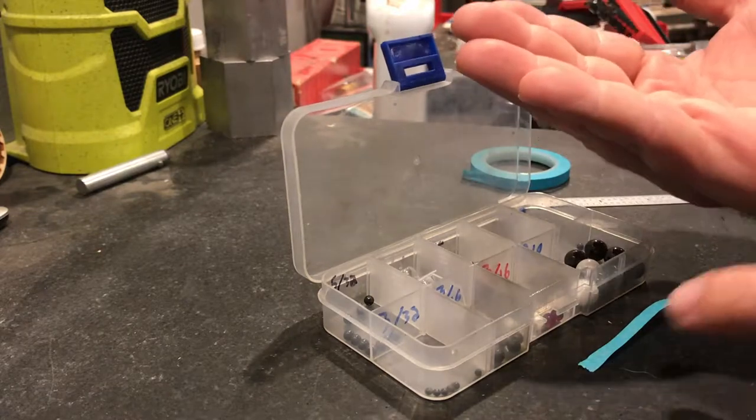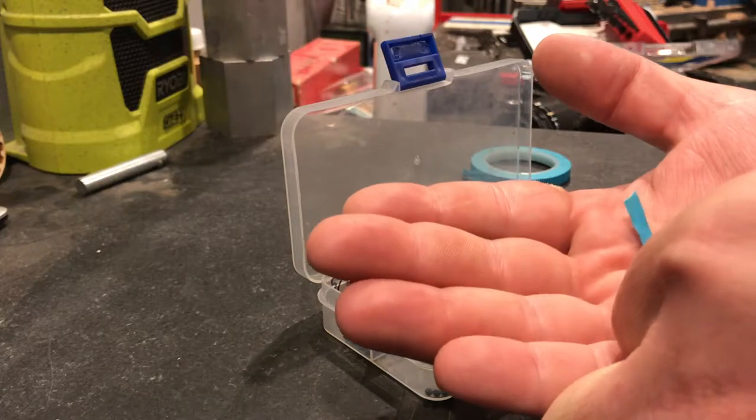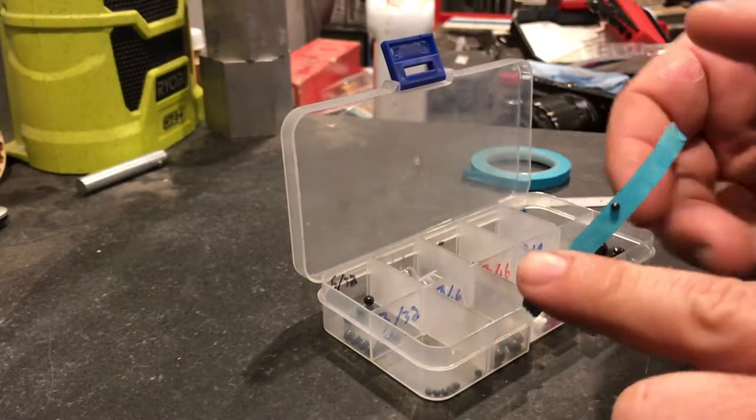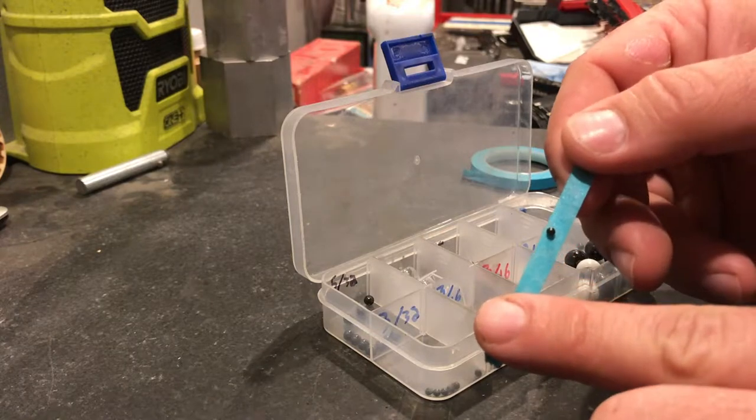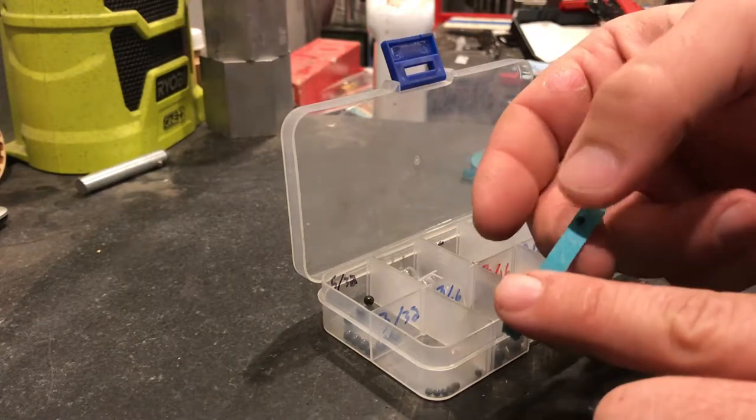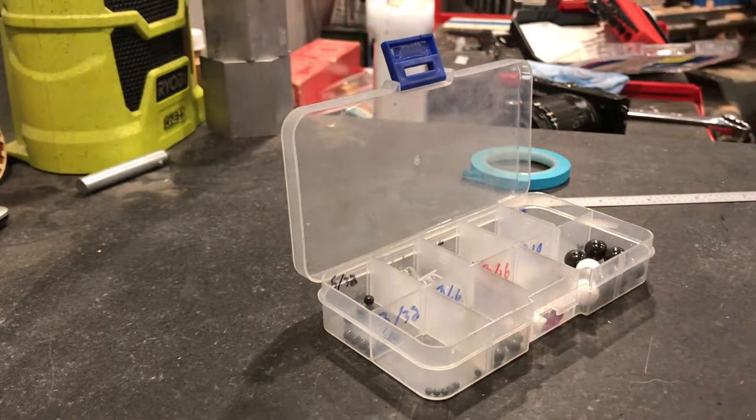Typically I take that bearing and set it down on there, but maybe easier just to grab that tape and stick it around the bearing. That's it, so that bearing is stuck to the tape. I didn't have to do much, I just stuck it on there.